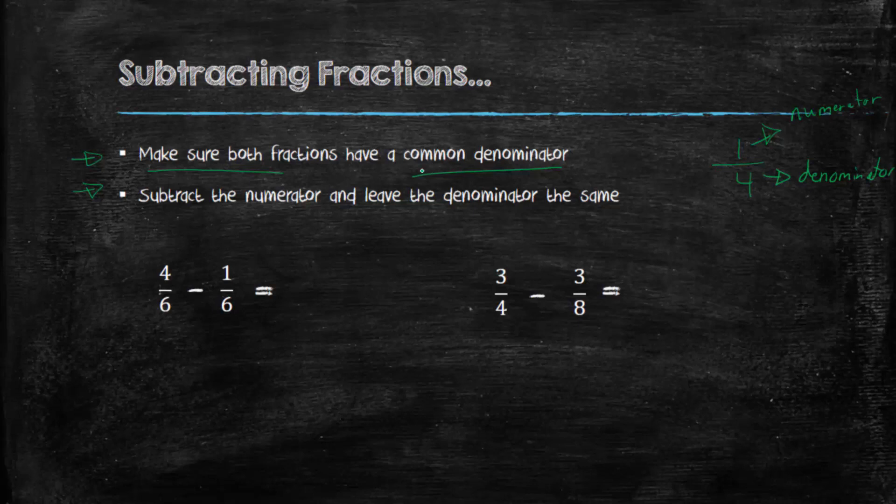So when I say we have to have a common denominator in both fractions, that means the two bottom numbers have to be the same. And then the second thing you do once both fractions have a common denominator, you subtract the numerator and leave the denominator as is.